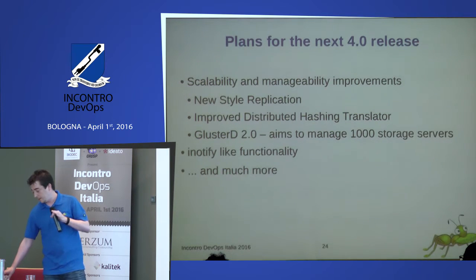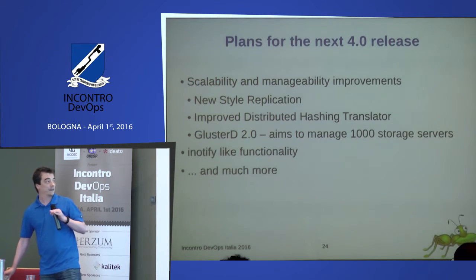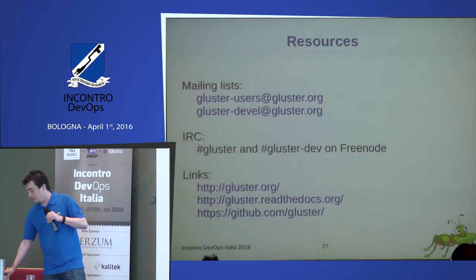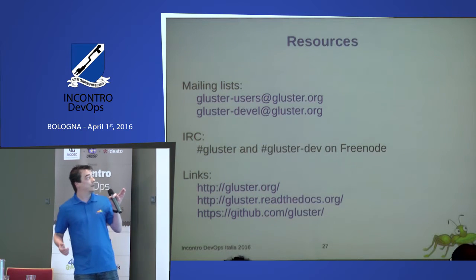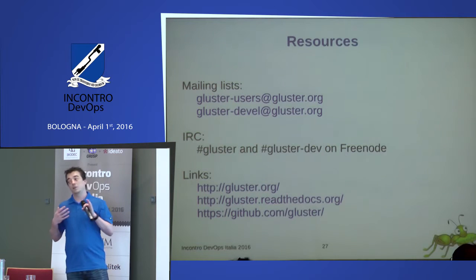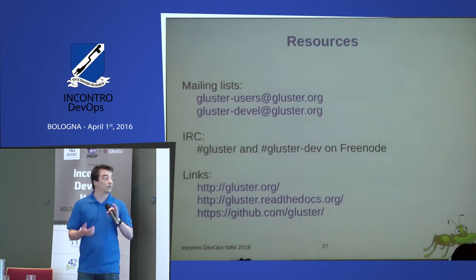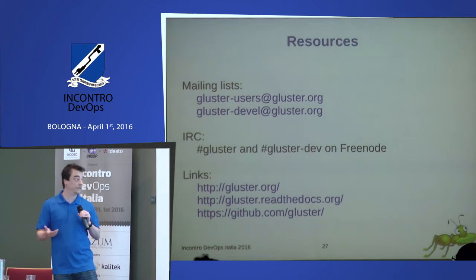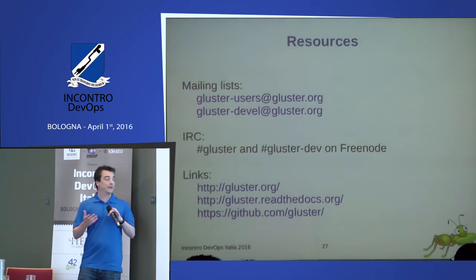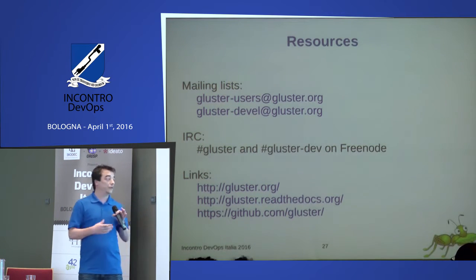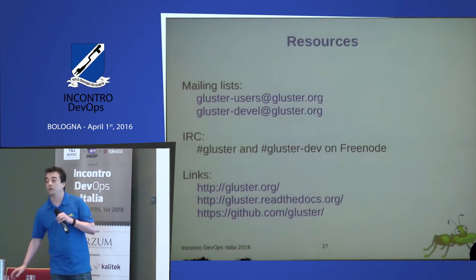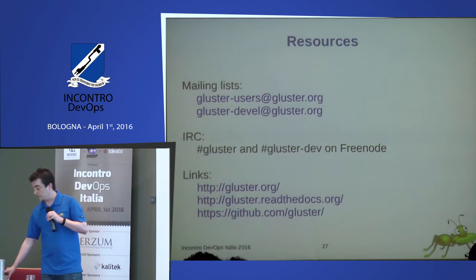Gluster 4.0 is also coming, hopefully in December of this year, though we're not sure yet if we can make that. For resources: if you have questions about Gluster, you can email the Gluster users list or the Gluster developers list. If you want your application to use LibGF API, contact us on the gluster-devel list. We're also available on IRC on Freenode in the #gluster and #gluster-dev channels. Documentation and many projects are available under the Gluster organization on GitHub.